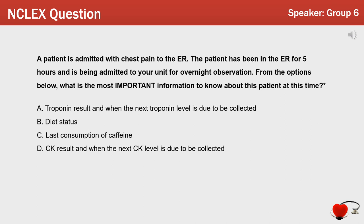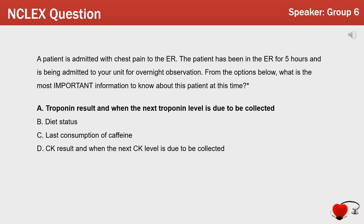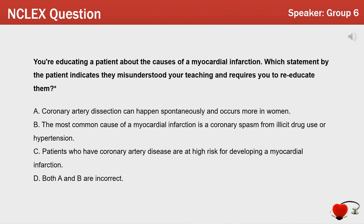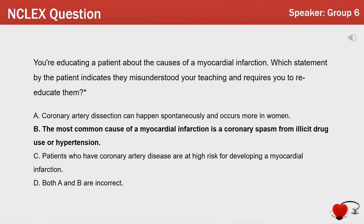Quiz questions. Question 1: A patient is admitted with chest pain to the ER and has been there for five hours, now being admitted to your unit for overnight observation. What is the most important information to know about this patient at this time? The correct answer is A: Troponin result and when the next troponin level is due to be collected. Question 2: You are educating a patient about the causes of myocardial infarction. Which statement by the patient indicates they misunderstood your teachings and require re-education? The correct answer is B: 'The most common cause of a myocardial infarction is a coronary spasm from illicit drug use or hypertension.'